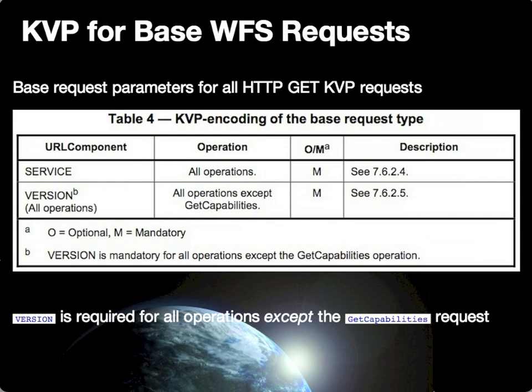As we look at the key value pairs for base web feature service requests, these are the core components of any request submitted to a WFS. The service parameter is required for all requests. For all requests except the GetCapabilities request, a version parameter is also required — so service is required for all requests, and version is required for all except GetCapabilities, for which it is optional.